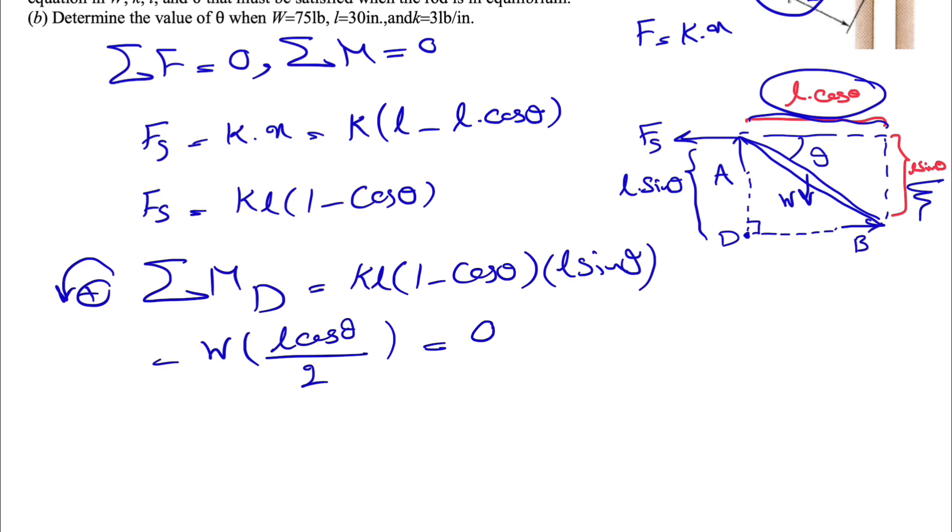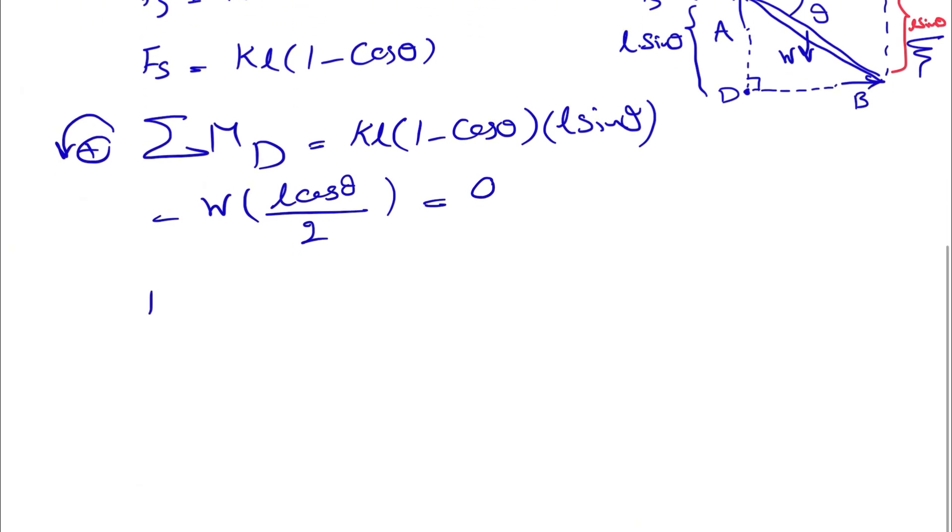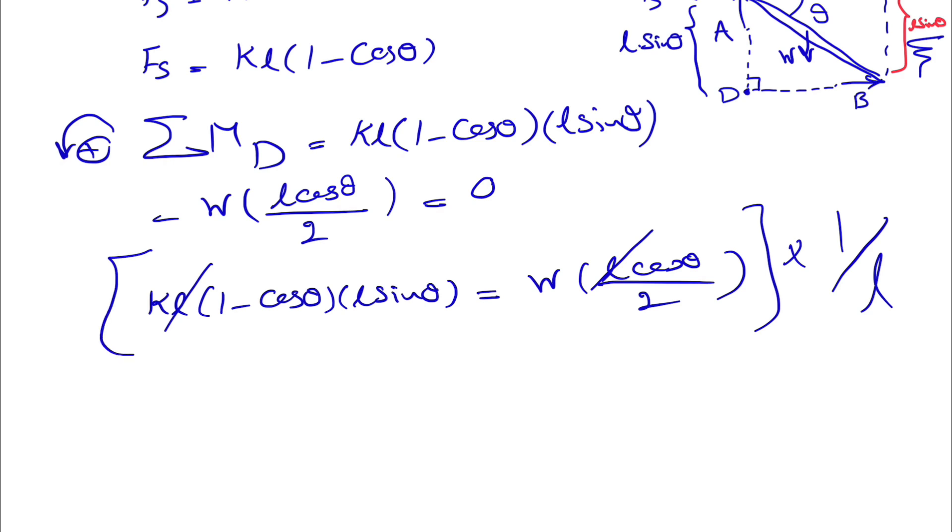What we've found so far is that KL times 1 minus cosine of theta times L sine of theta is equal to, we're just going to bring the second expression to the right side of the equation, so we'll have positive W times L cosine of theta divided by 2. We can cancel out one of the L's from each side by multiplying both sides by 1 over L.